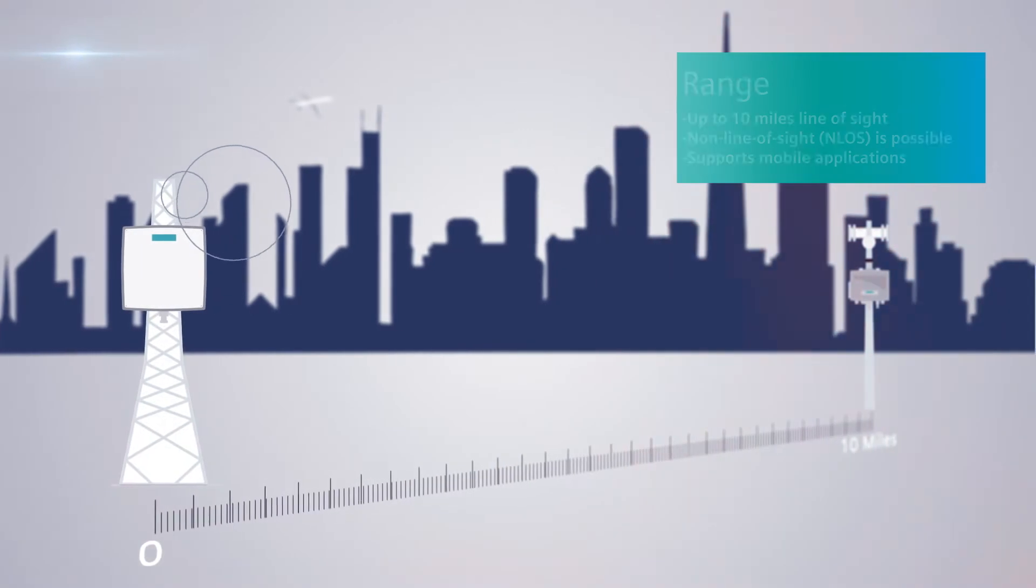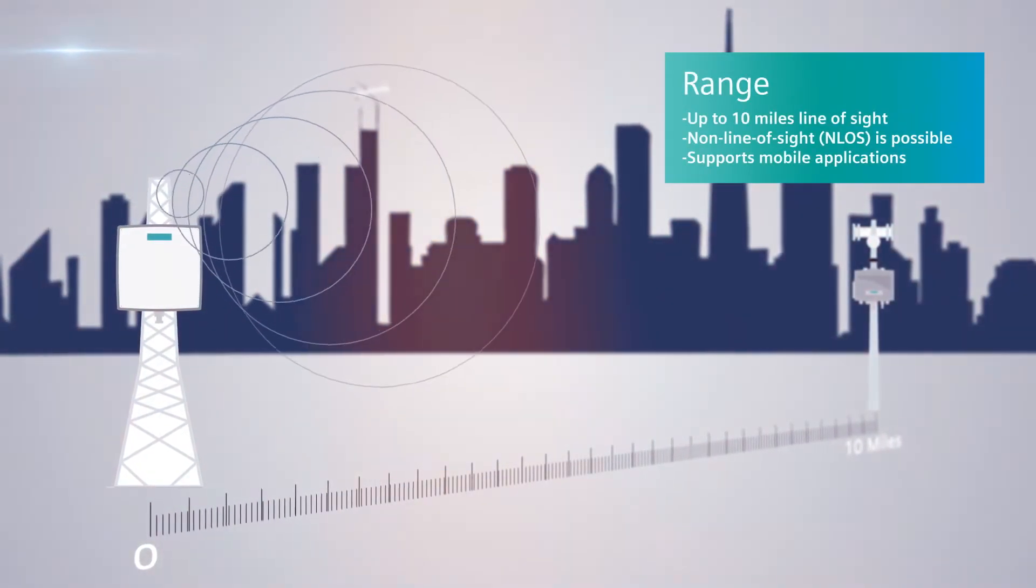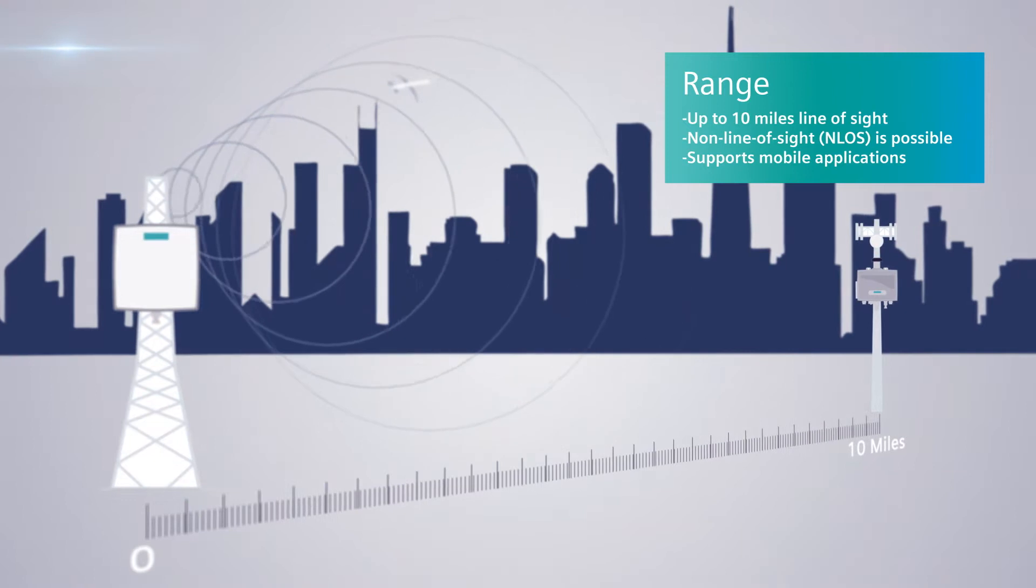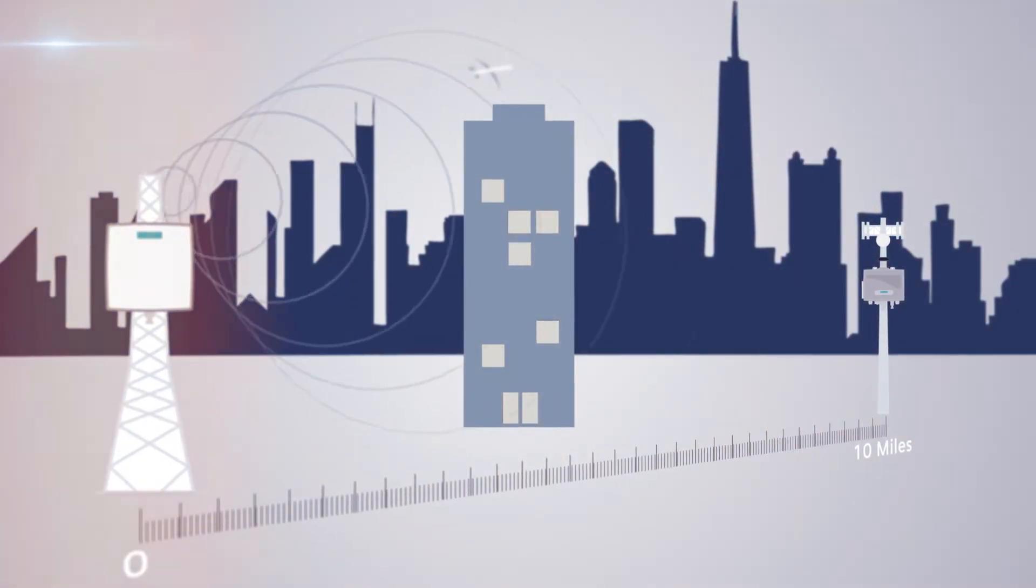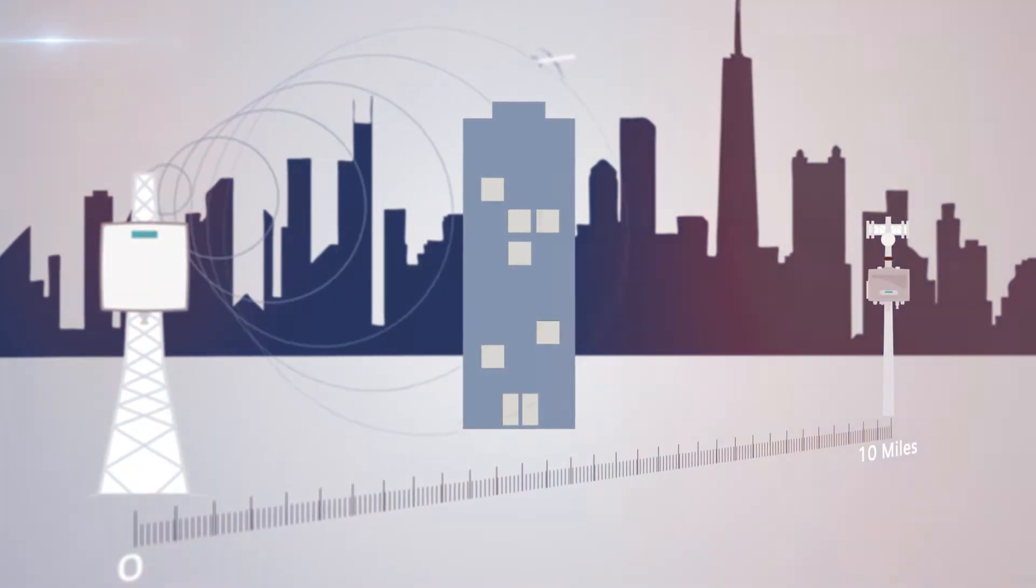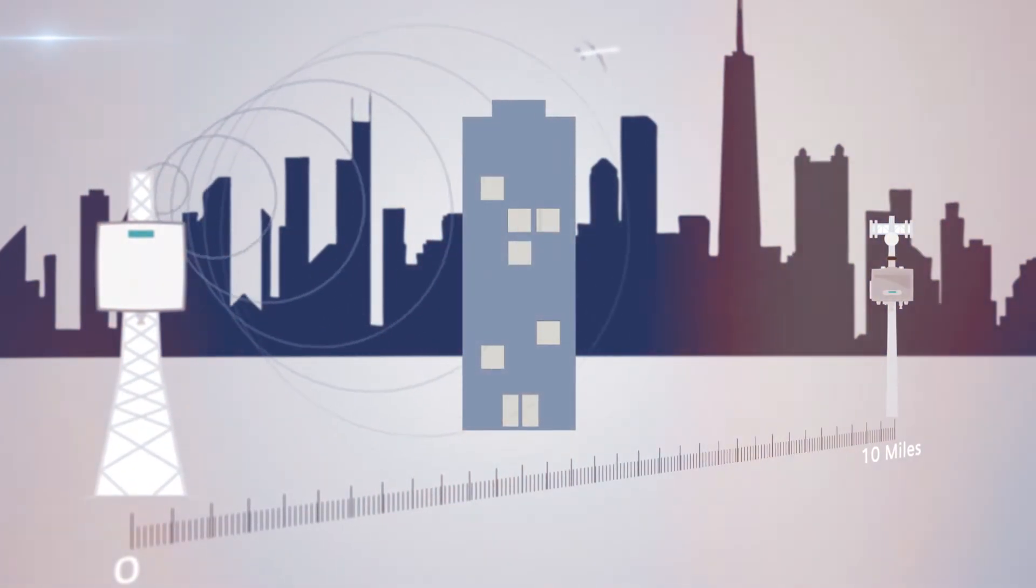Using the IEEE 802.16e standard, you can communicate up to 10 miles line of sight, and in some cases, non-line of sight, without the use of a repeater, and have a seamless handoff between base stations and mobile applications.